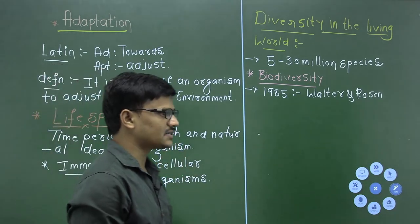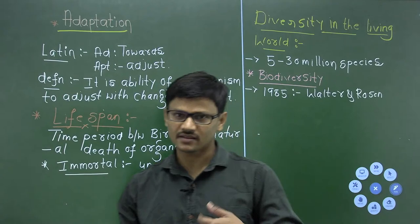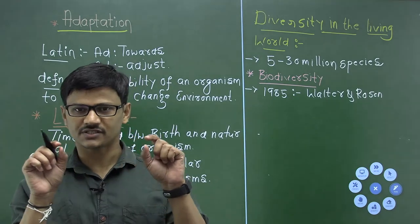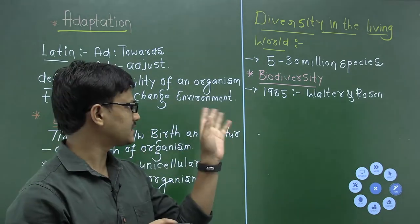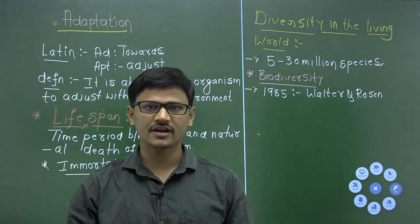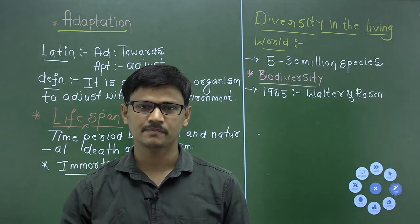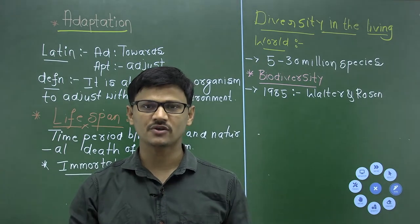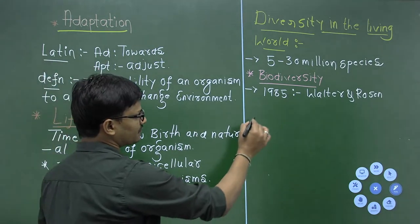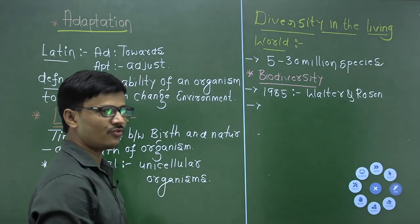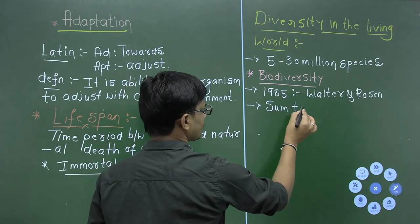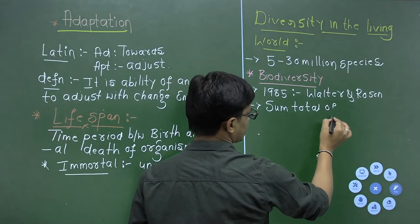Biodiversity is a contracted form — it is a short form of 'biological diversity.' Biodiversity means our earth is full of different types of species, and all these species present on the earth together are called biodiversity. A simple definition is: biodiversity is the sum total of species richness.